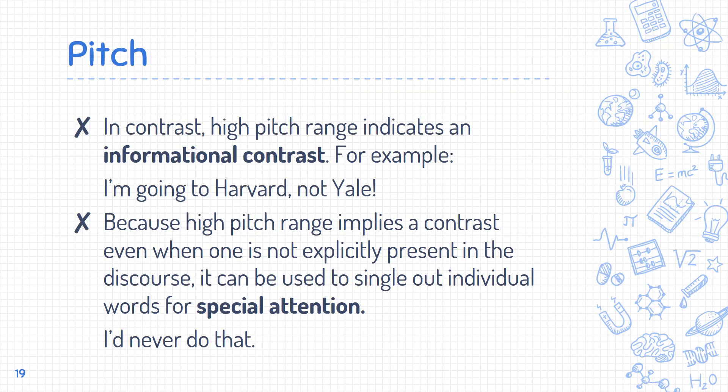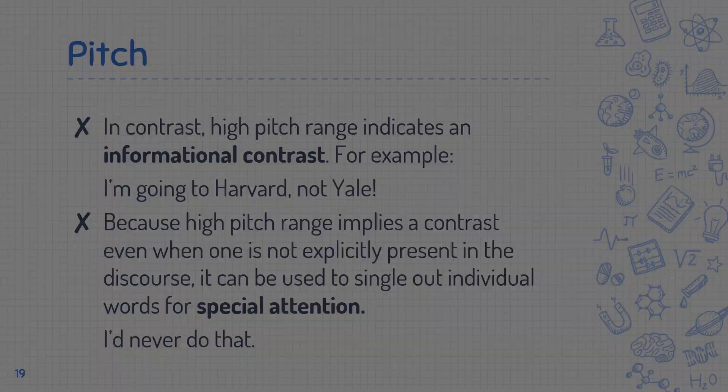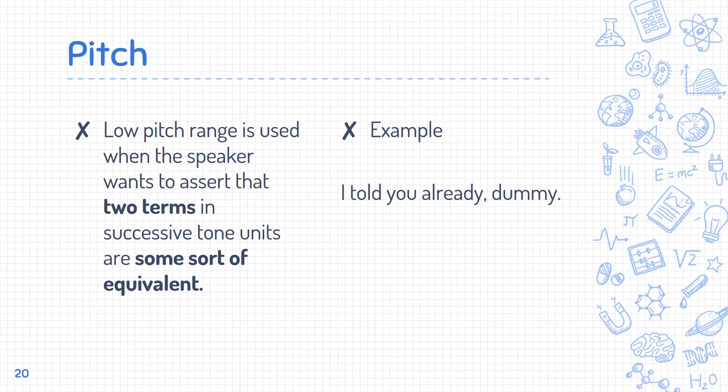High pitch range indicates an informational contrast — for example, 'I'm going to Harvard, not Yale.' Because high pitch implies a contrast even when one is not explicitly present, it can be used to single out individual words for special attention, like 'I'd never do that.' Low pitch range is used when the speaker wants to assert that two terms in successive tone units are some sort of equivalent — for example, 'I told you already. Tell me.'